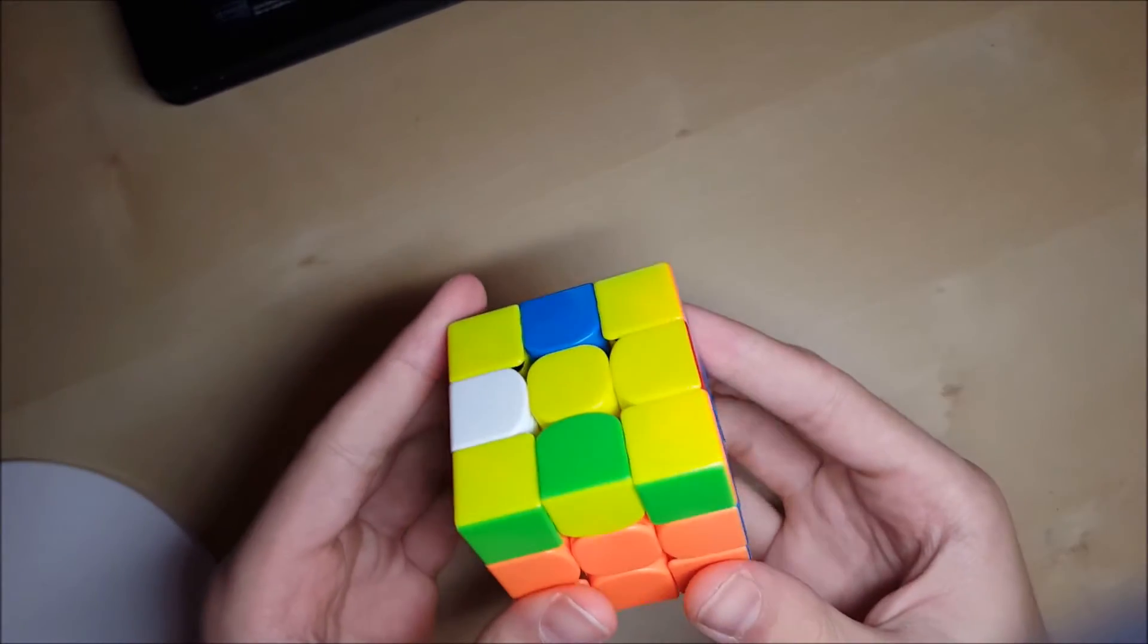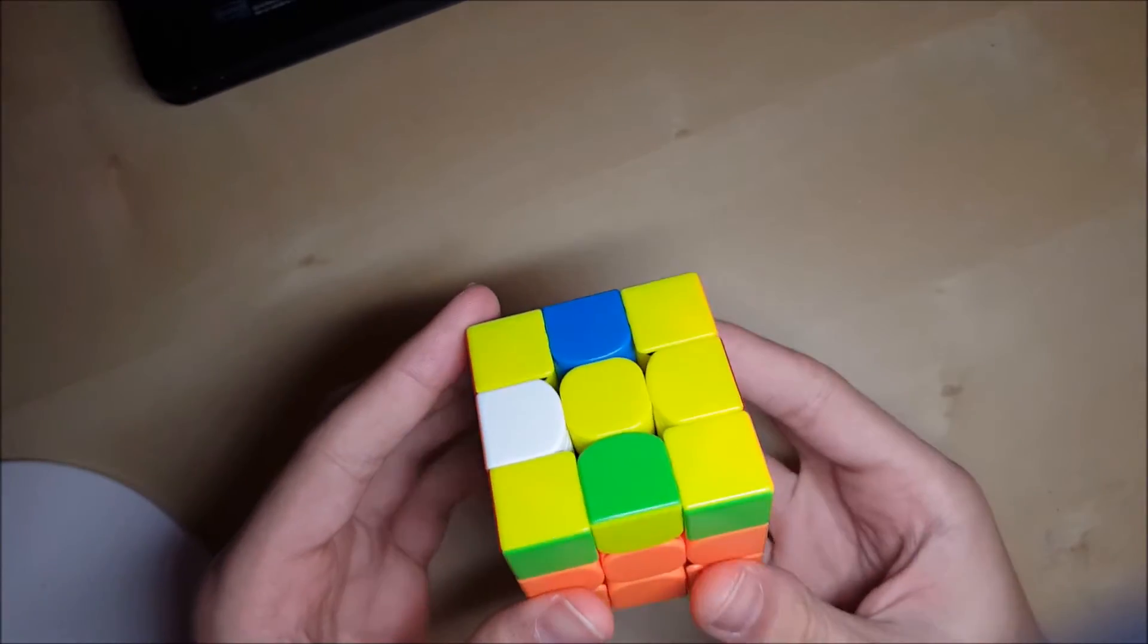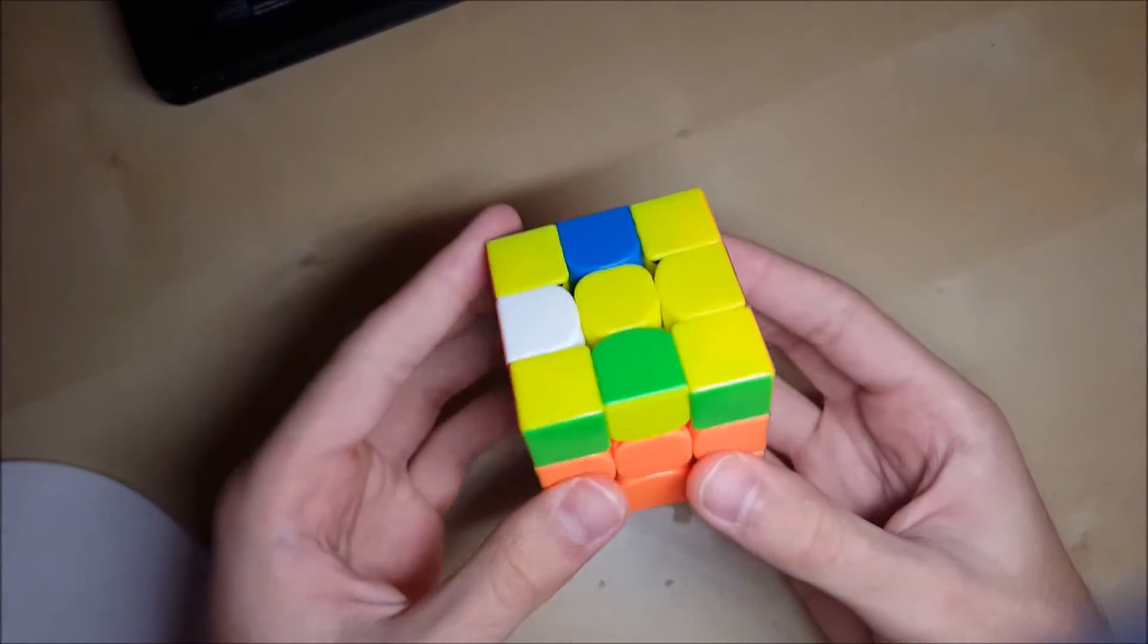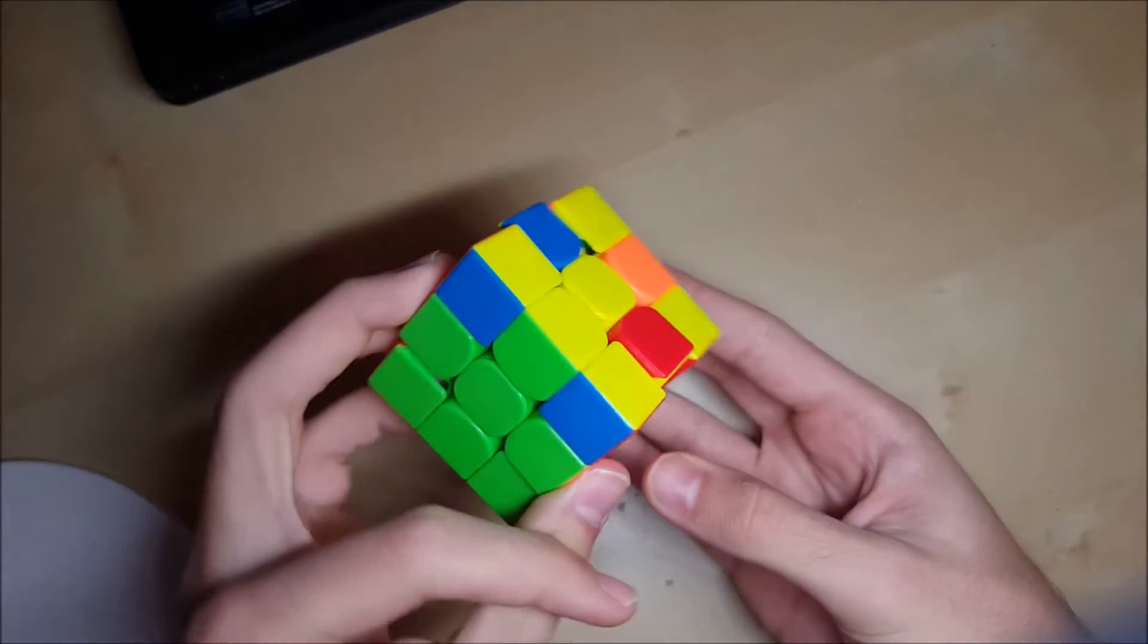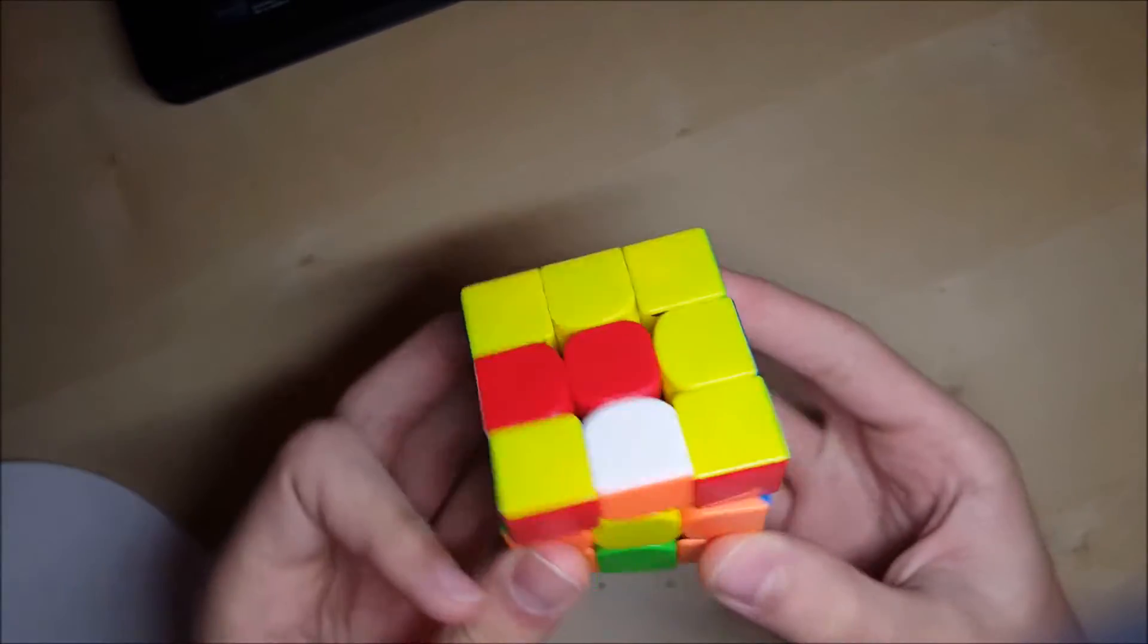So when they're both flipped on the top, you just do M' U' M, or M U' M, basically anything works. So that works to get a good arrow, so side back. This works.